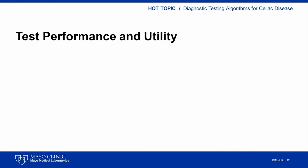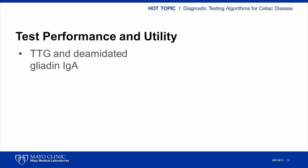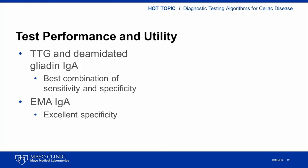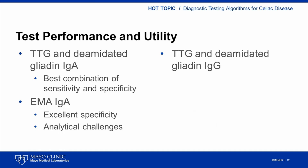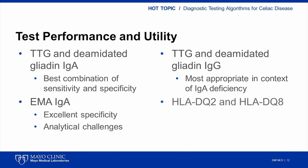It is important to summarize the test performance and clinical utility of the various serologic and genetic tests for celiac disease. The IgA isotypes for TTG and deamidated gliadin consistently show the best combination of sensitivity and specificity. EMA IgA generally demonstrates excellent specificity, but because EMA is performed by indirect immunofluorescence, it can have analytical challenges for the laboratory. The IgG isotypes for TTG and deamidated gliadin are most appropriate for patients with selective IgA deficiency. HLA-DQ2 and HLA-DQ8 are most useful as a rule-out test to exclude celiac disease as a diagnosis.